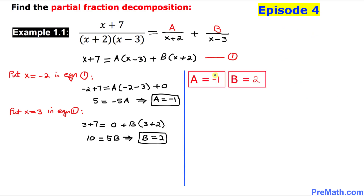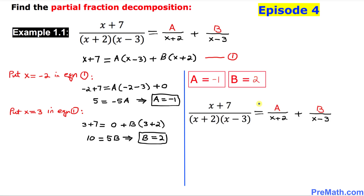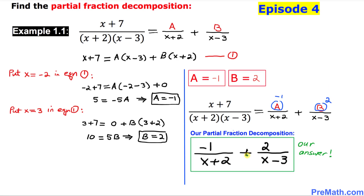So A equals negative one and B equals two. In our fraction, wherever we see A we replace it by negative one, and wherever we see B we replace it by two. Here is our final answer. Thanks for watching and please don't forget to subscribe to my channel for more exciting videos.